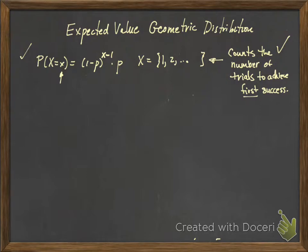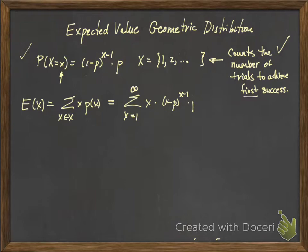Okay, so to find the expected value of any discrete distribution, it's the sum of all X in our random variable X times P of X. And so in our particular scenario, we're starting at X equals 1, right? We have to have at least one trial if we're going to in order to get a success, up to infinity of X times 1 minus P to the X minus 1 times P.